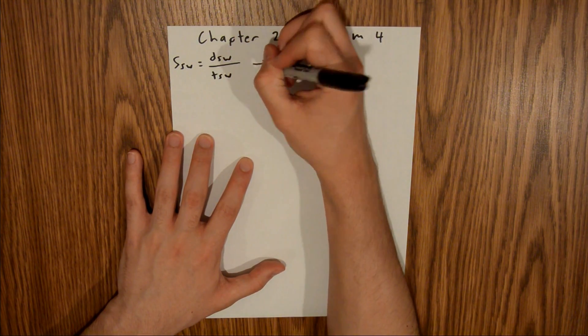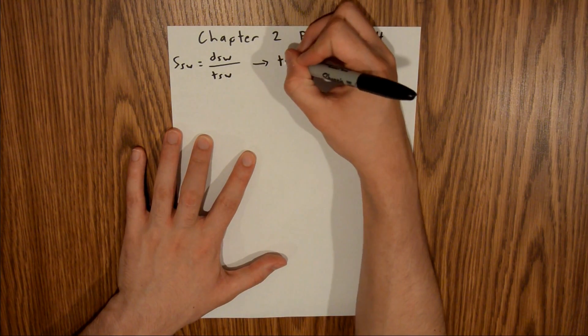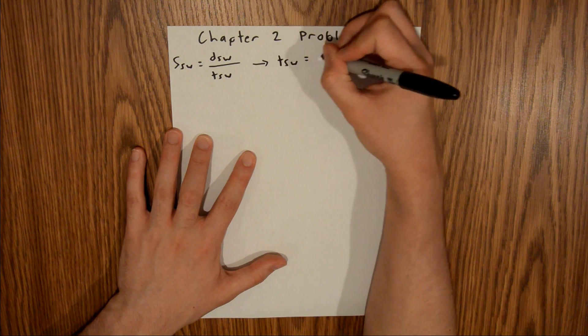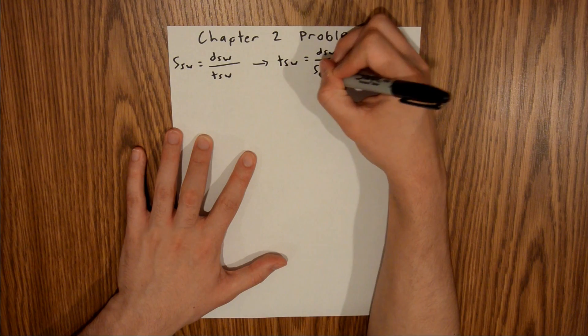That will give us the time of SW is equal to the distance of SW divided by the speed of SW.